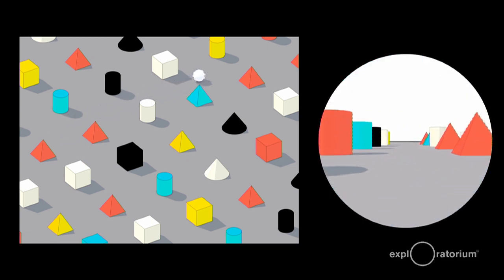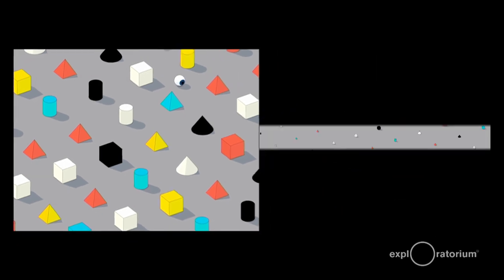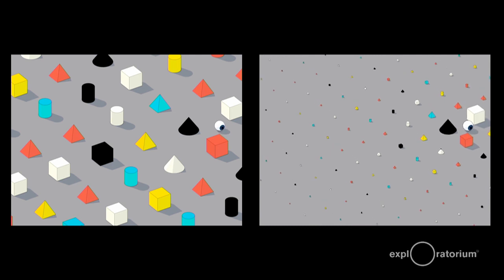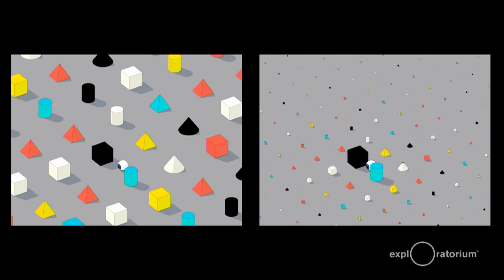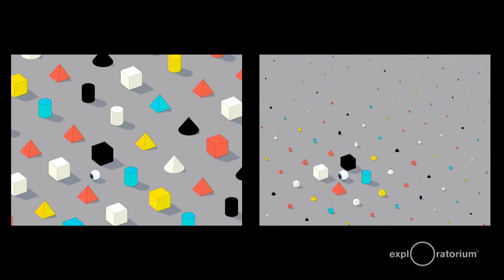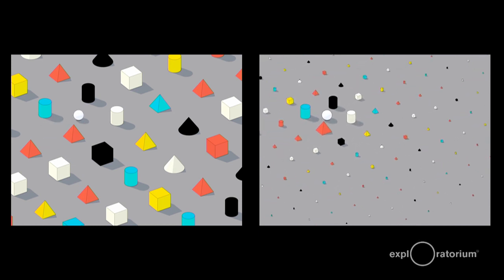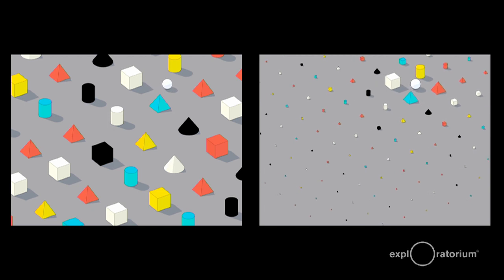All the stuff that's nearby looks really big, and all the stuff that's far away looks really small. So if you were to take your eye at its word, your naive impression might be that the world was behaving a little more like this — things swell up as you get close to them and shrink down as they get far away. Your eye is actually lying to you all the time about what the world looks like, and it's a lie that we call perspective.